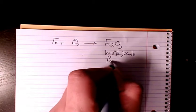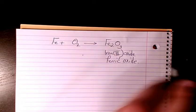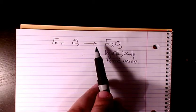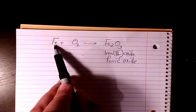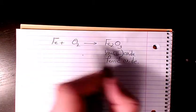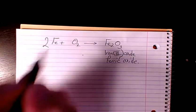So I start balancing Fe. We have one Fe on the reactant side, and on the product side we have two. So I can put 2 here. Now we have 2 Fe on the reactant side and 2 Fe on the product side, so that's balanced.